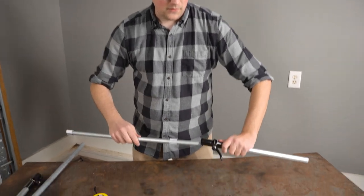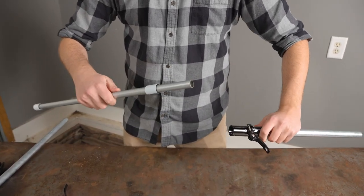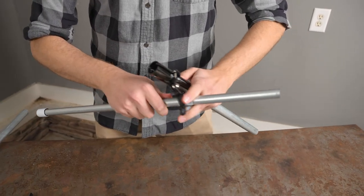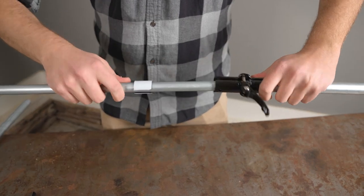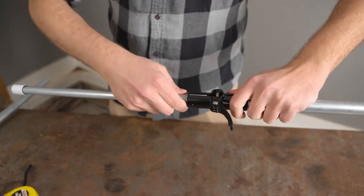You could do something similar with a conduit frame. Basically doing the same thing where you've got a piece of half-inch EMT going through and connected to the coupling and the three-quarter-inch EMT.